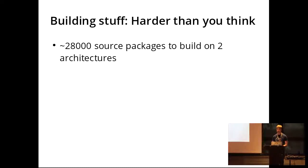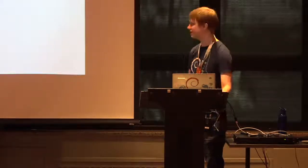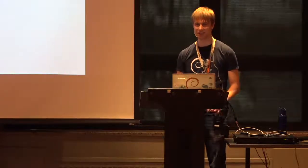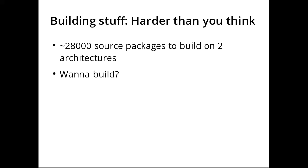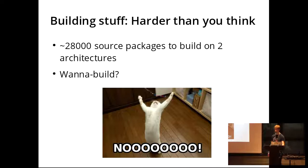We are a distribution which rebuilds all packages that Debian has and it's based upon testing. So we had the task of building 28,000 source packages on two architectures, which is quite a lot. We originally thought we should use wbuild because that's what Debian uses, but this turned out to be a really hard task because wbuild was developed in the origins of Debian and it's almost impossible to set up for any derivative — which basically brings us to the first and only cat picture in this talk.